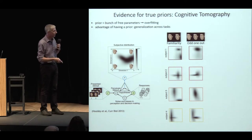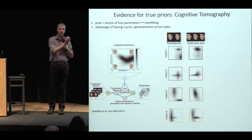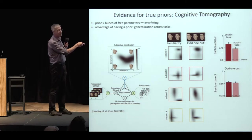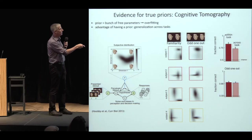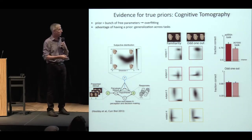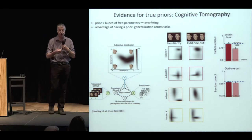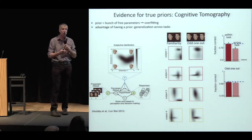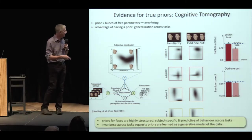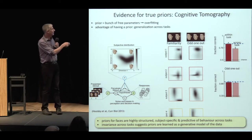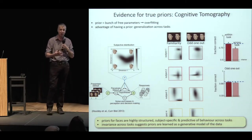The proof of the pudding is: can we use the prior fit from one task to predict performance on the other? Taking half the data to predict the other half, we do well above chance on familiarity. Taking the prior from the odd-one-out task to predict familiarity performance, we do pretty well. And going the other way, we do equally well whether we use the prior from the same task or the other. We can also compute an upper bound based on consistency scores. We almost do as well as we can by extracting these priors. This suggests that face priors are highly structured, subject-specific, and very predictive of behavior across tasks — pointing to a generative model rather than a discriminative model.